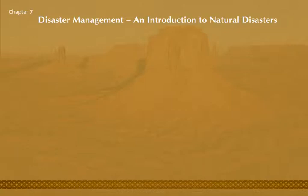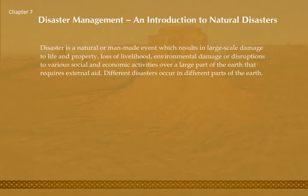Chapter 7: Disaster Management — An Introduction to Natural Disasters. A disaster is a natural or man-made event which results in large-scale damage to life and property, loss of livelihood, environmental damage, or disruptions to various social and economic activities over a large part of the earth that requires external aid.